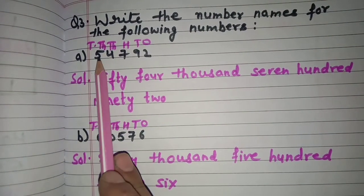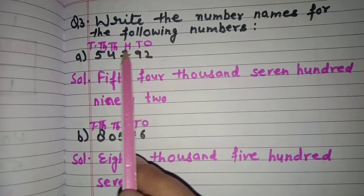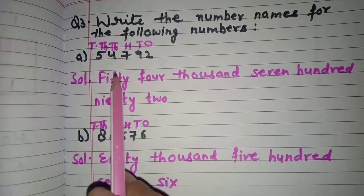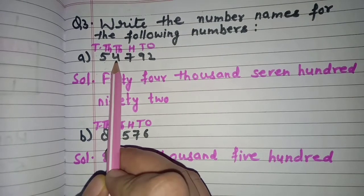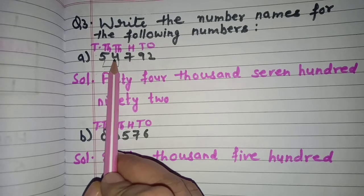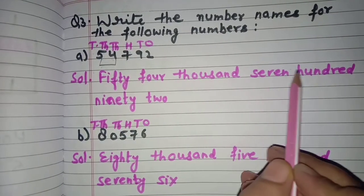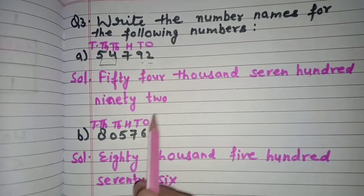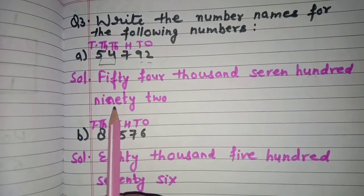Part a: 54,792. If we have to write the number name, first of all we will mention the places above it — ones, tens, hundreds, thousands, ten thousands. Now 5 and 4 come under the thousands period, so we will read them together: it is 54 thousands. 7 is at hundreds place so we will write 700. Then tens and ones place we read together: it is 92. So the number name is fifty-four thousand, seven hundred and ninety-two.